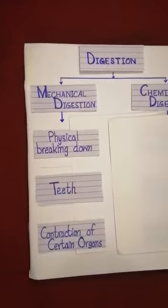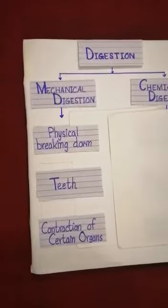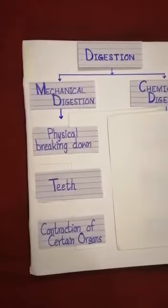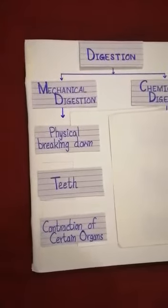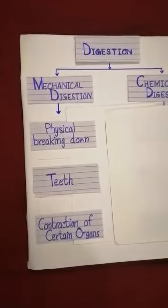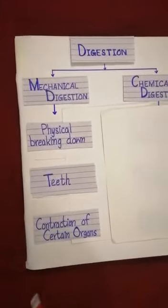It begins in the mouth as food is chewed with the help of teeth into smaller pieces before it is swallowed. It also happens in the stomach through the contraction and relaxation of stomach muscles.